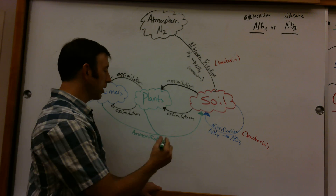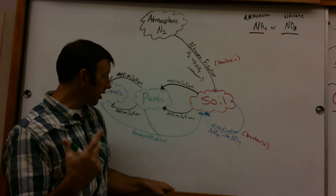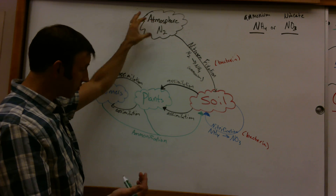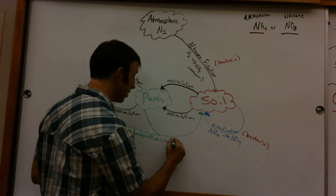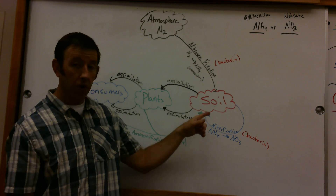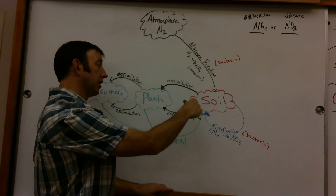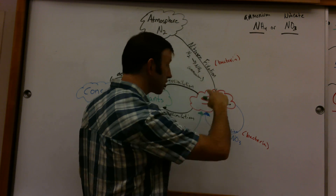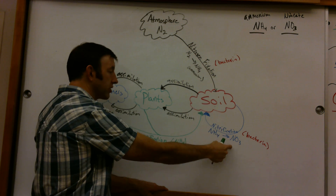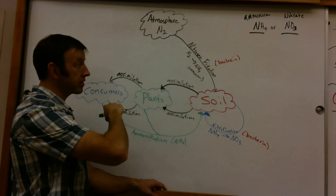Essentially, ammonification is part of that decomposition process. Our bacteria and fungus are the primary decomposers. When animals, plants, whatever die and decompose, carbon — as you recall — ends up returning directly to the atmosphere. The nitrogen, however, actually becomes ammonia again. As we decompose, our decomposing bacteria return nitrogen back to the soil, as opposed to directly back to the air. The form it takes back in the soil is ammonium, in which case it could be assimilated directly as ammonium or go through the nitrification process again to become nitrate. So we have this sort of internal cycle.